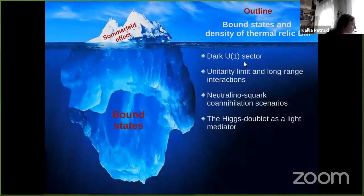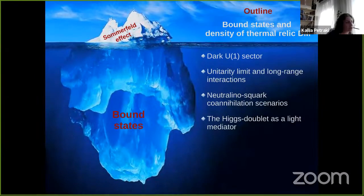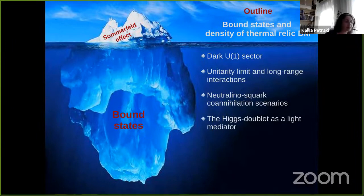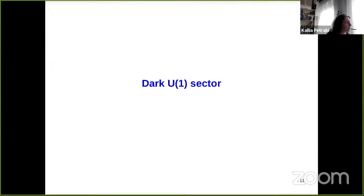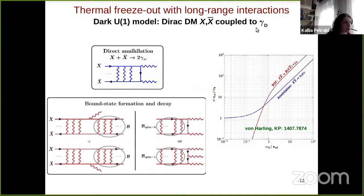There are four things I want to go through: first, a simple dark U(1) sector to show what happens; then the relation between the unitarity limit and long-range interactions; then some results from neutralino squark co-annihilation scenarios; and then the Higgs doublet as a light force mediator. For the dark U(1) sector, assume dark matter is made of a pair of Dirac fermions coupled to a massless or extremely light dark photon.